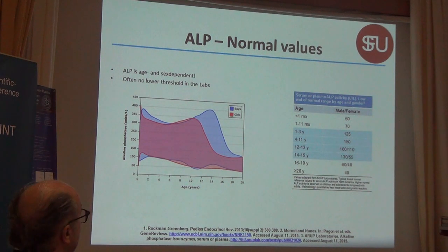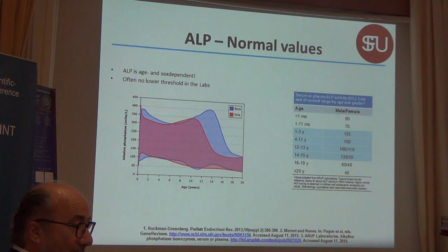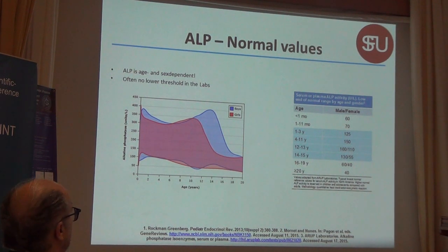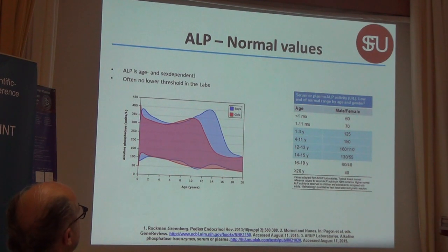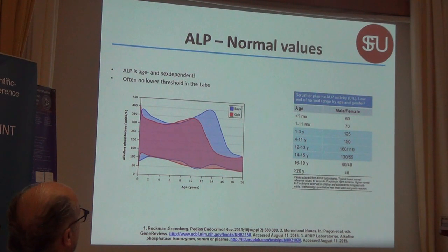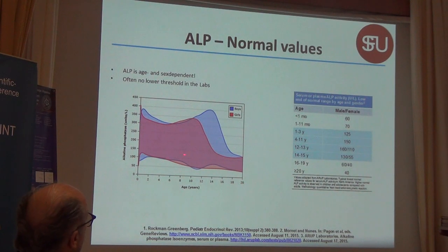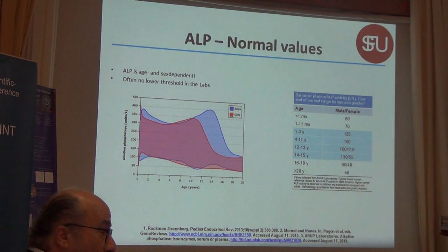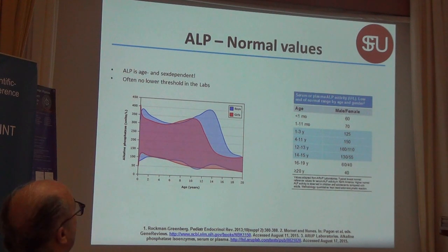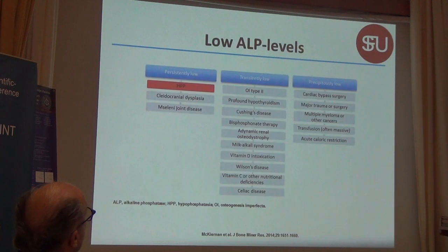An important point is that we never look at the lower range of normal values for alkaline phosphatase — we only look for elevated levels. In younger ages, there is a completely different defined normal range, and therefore in younger people we often do not take into account that a value may be relatively high for their age yet still too low for normal function. Therefore, many cases are not identified because they are not seen.